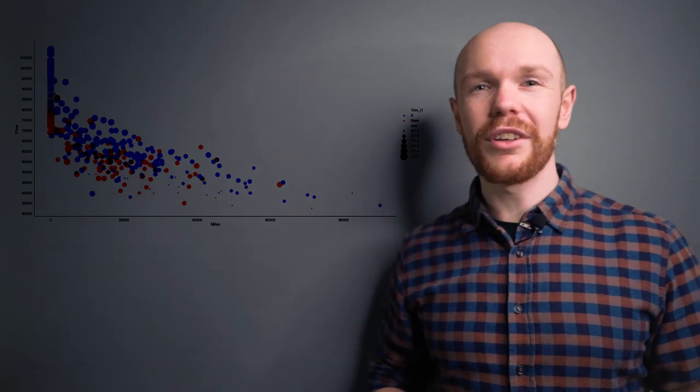You can see that we have the mileage now on the horizontal axis and the price on the vertical axis. The cars are still displayed by the bubbles, but there are two things going on with these bubbles.